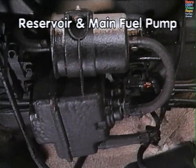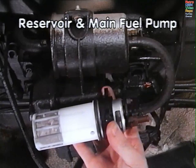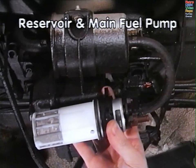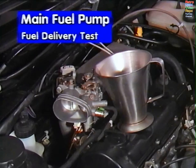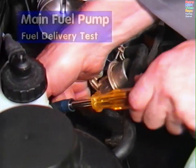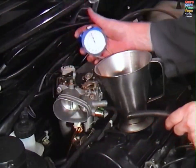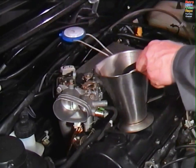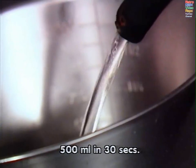Reservoir and main fuel pump. Situated under the vehicle, this reservoir houses the main fuel pump. This must receive a voltage supply of at least 11.5 volts. The main fuel pump is checked in the same way as the lift pump. Fit a temporary hose to the return side of the pressure regulator and energize the pump. At least 500 milliliters of fuel should be delivered in 30 seconds.